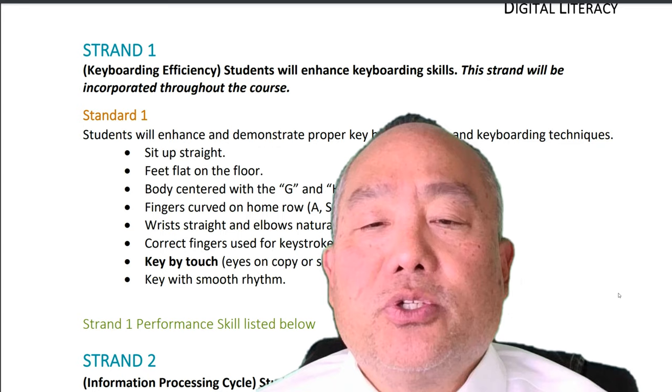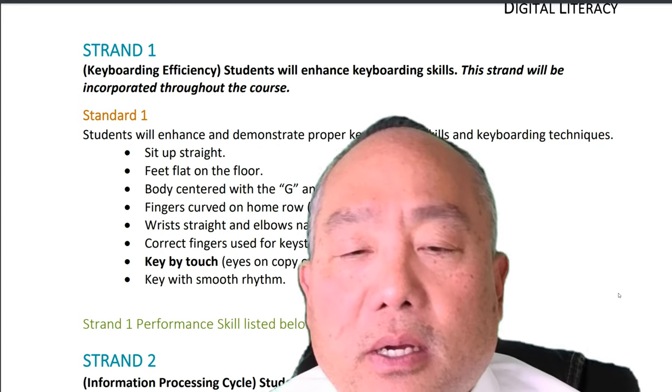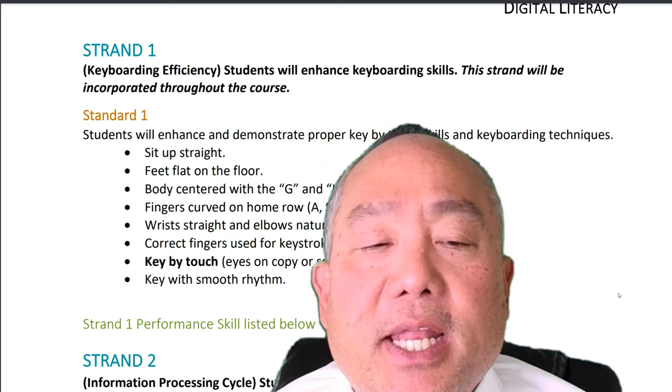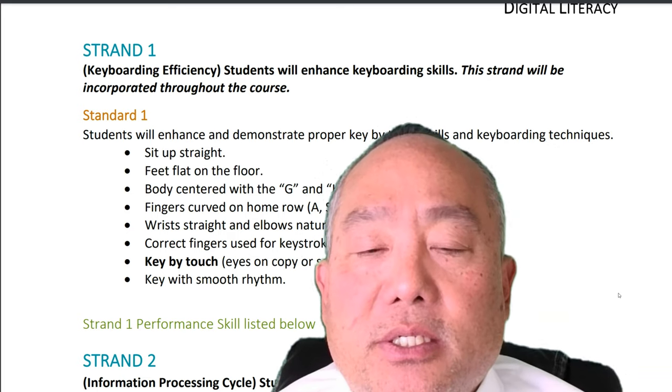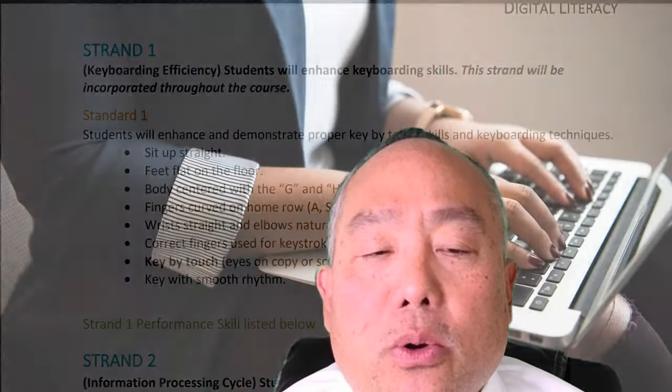You must sit up straight, feet flat on the floor, body centered with the G and H keys, fingers curved on the home row: A, S, D, F, J, K, L, semicolon. Wrists straight, and elbows naturally at sides.